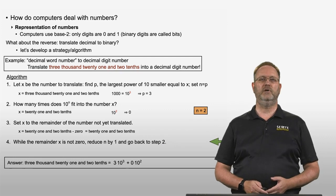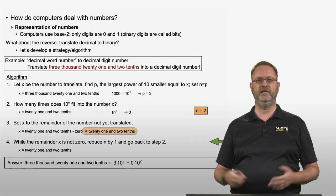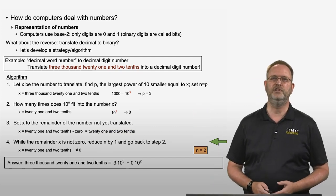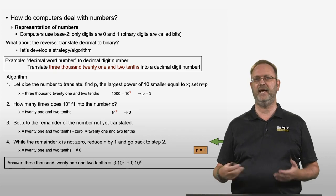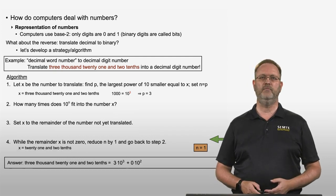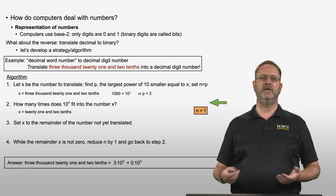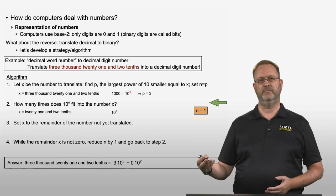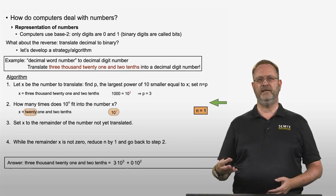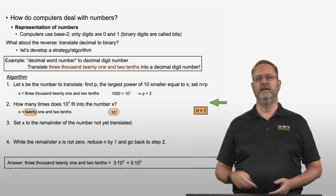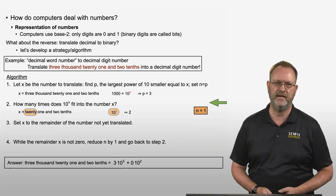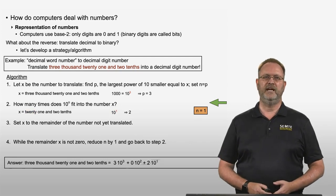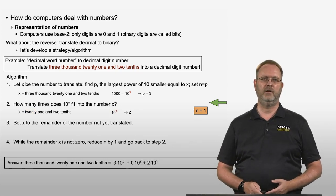The remainder is still 21 and 2 tenths, not zero, so we reduce n by 1 from 2 to 1 and go back to step 2. Now: how many times does 10 to the power 1 fit into 21 and 2 tenths? 10 to the power 1 is 10, and 10 fits 2 times into 21 and 2 tenths (since 2 times 10 is 20). So we add plus 2 times 10 to the power 1 to our translation.